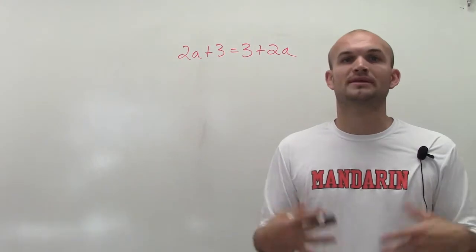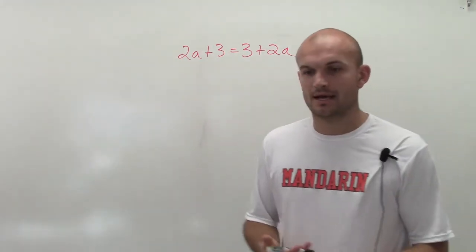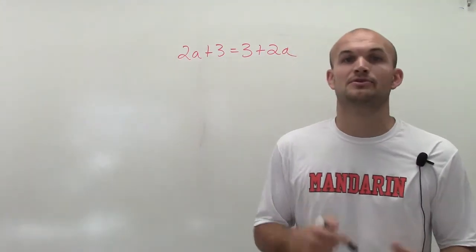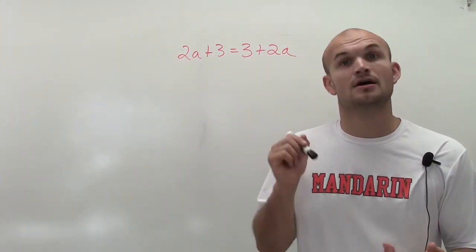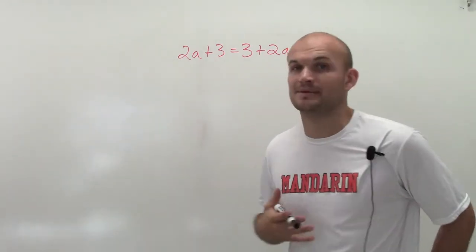But we've got to remember, once we start including multiple variables, especially when we include them on opposite sides, we need to start looking for different opportunities where we might have infinitely many solutions or no solution at all. This is going to be an example of one.